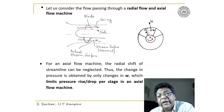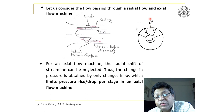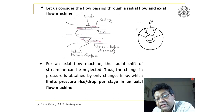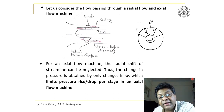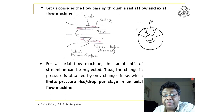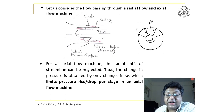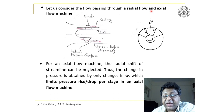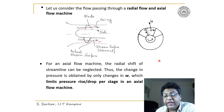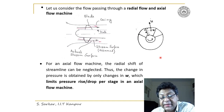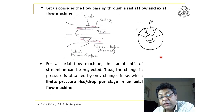In a radial flow machine, as streamlines pass through the impeller there is a significant change of radius. So apart from acceleration and deceleration of the relative velocity, the effect of radius plays a significant role. Therefore, the pressure rise per stage in a radial flow machine is higher than that of an axial flow machine, as can be easily appreciated from the expression for relative total pressure.